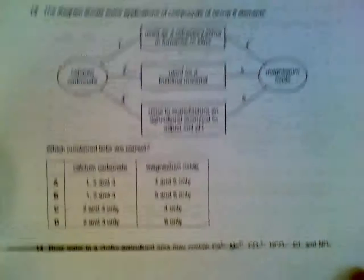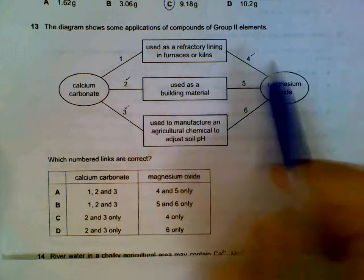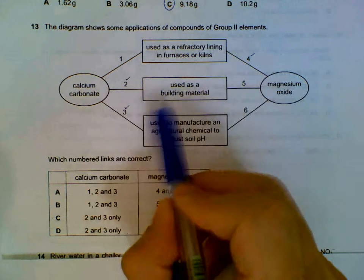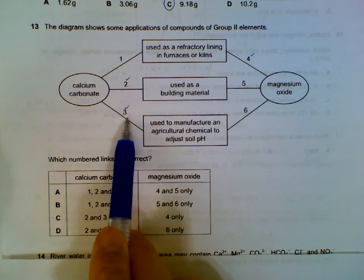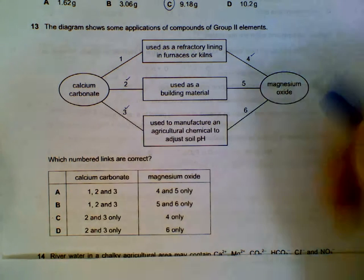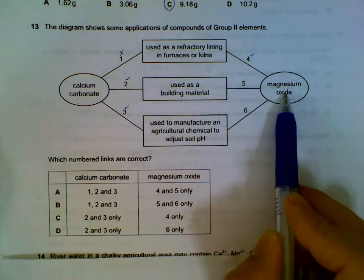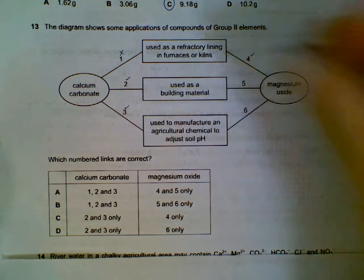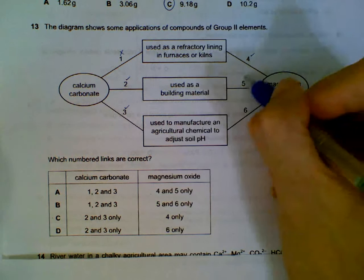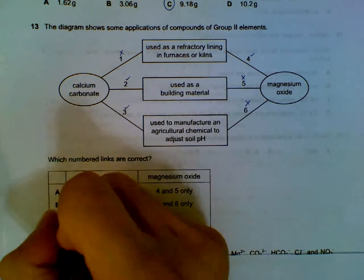Question 13 is a recall question. You need to know that calcium carbonate is used as a building material, is part of marble, and can neutralize acidic soil. It is not used as lining in furnaces, so option 4 is correct. It is not used as a building material nor to adjust soil pH, so the answer is option C.